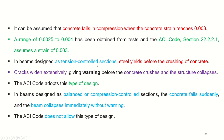In beam design as tension control sections, steel yields before the crushing of concrete. This is our design objective — to design the beam as a tension control section where steel yields before concrete crushing, and cracks widen extensively giving warning before the structure collapses. The ACI code adopts this type of design. In beams designed as balanced or compression control sections, the concrete fails suddenly and the beam collapses immediately without warning. So the ACI code does not allow this type of design.